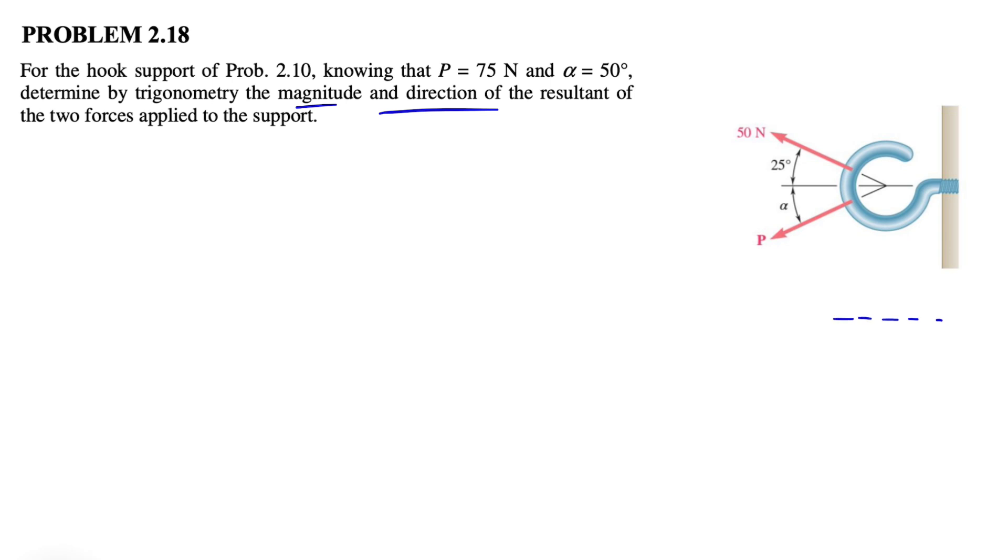If you look at these two forces, this is our horizontal line. We have the force P, which makes angle alpha in here, and we have the force 50 Newton on the other side, which makes the angle of 25 degrees here. Because this angle is 25 degrees, these two are at the same angle, both 25 degrees. The resultant would be the one that connects the tail of the first one to the end of the second one. So this is our R, and we also know alpha is 50 degrees.